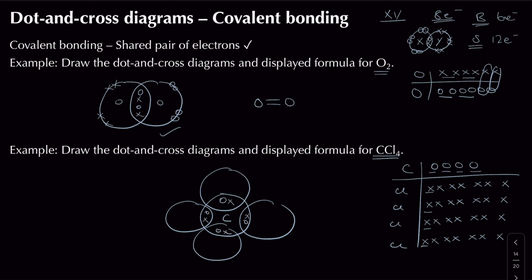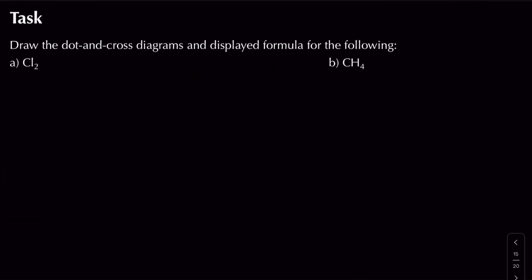Drawing the full diagram, I place carbon in the middle with a dot-and-cross shared pair to each chlorine. I also draw out chlorine's non-bonding electrons — three lone pairs on each chlorine atom. For the displayed formula, carbon has four single bonds, one going to each chlorine atom.